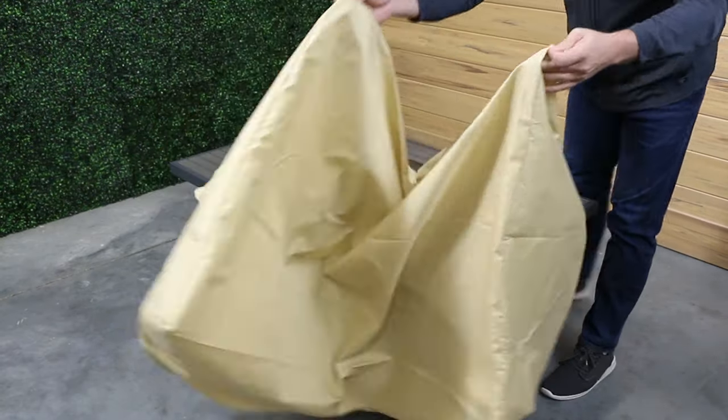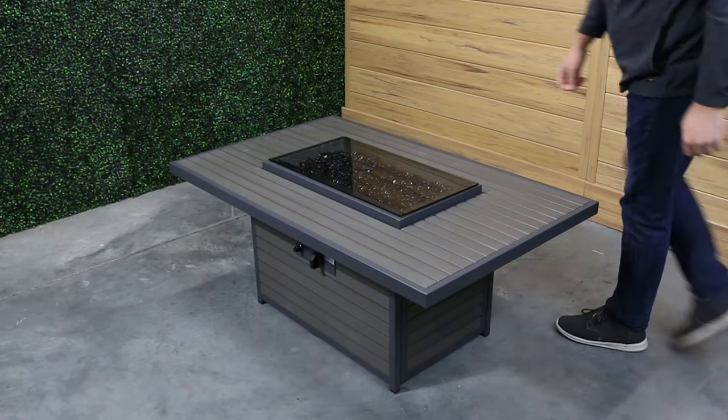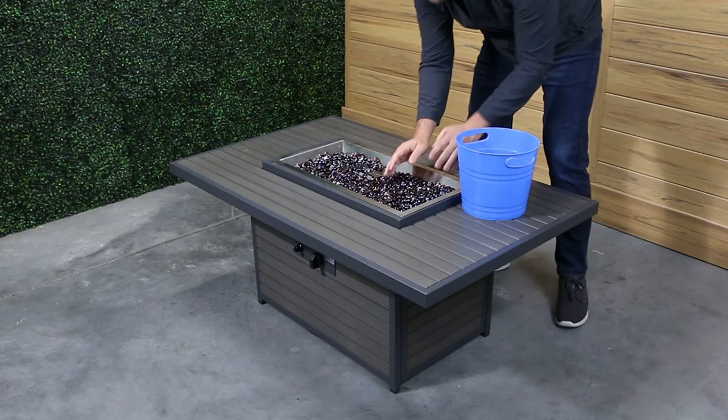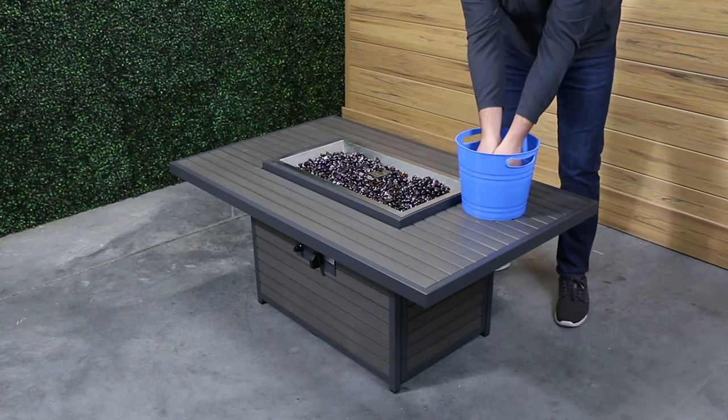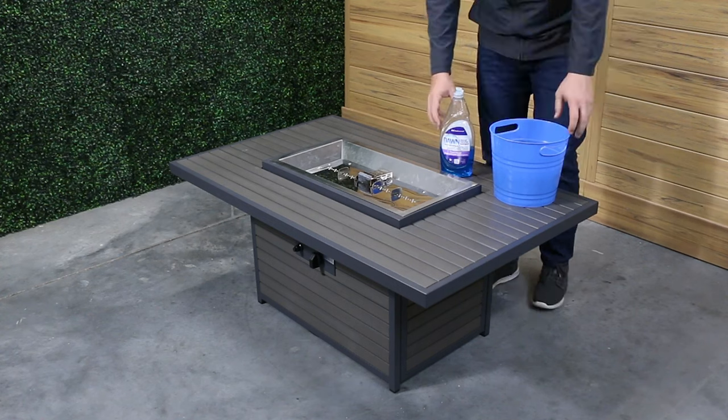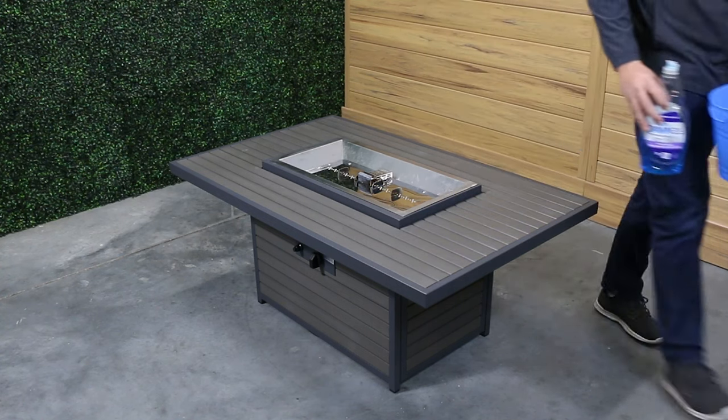Remove protective cover. Remove burner cover. Remove glass gems from burner. If necessary, glass gems can be cleaned in a bucket of water mixed with dish soap. Allow glass media to dry on a towel.